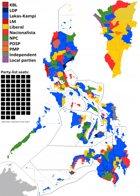The Philippines uses parallel voting for seats in the House of Representatives. A voter has two votes: one for a representative from one's legislative district, and another for a sectoral representative via closed lists under the party list system, with a 2% election threshold and three-seat cap.